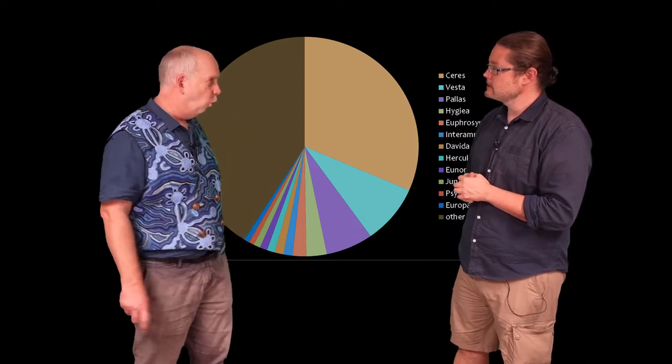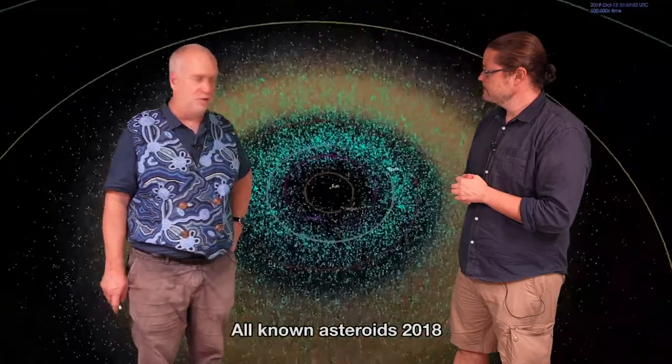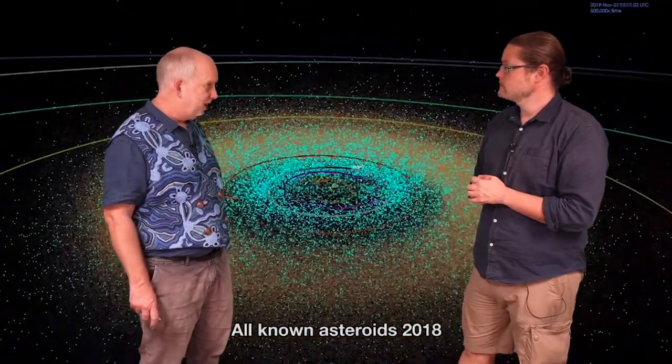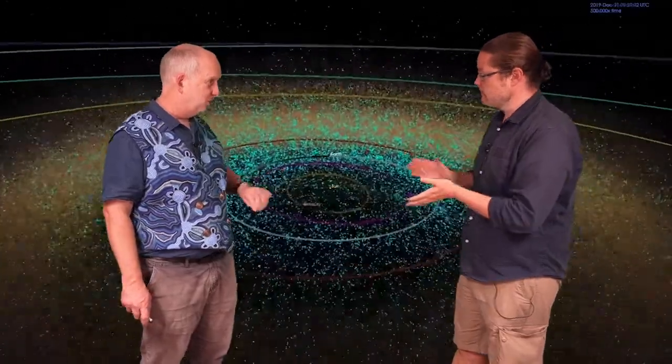Not that clear. I mean here's the orbits of the ones we know about as of a couple of years ago. And the vast majority are between the orbits of Mars and Jupiter but there are some spreading elsewhere. So they're not just in the asteroid belt? No that's right.